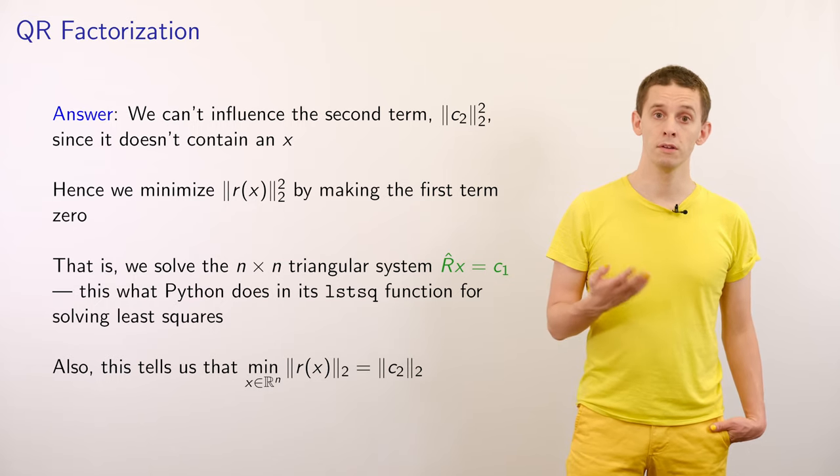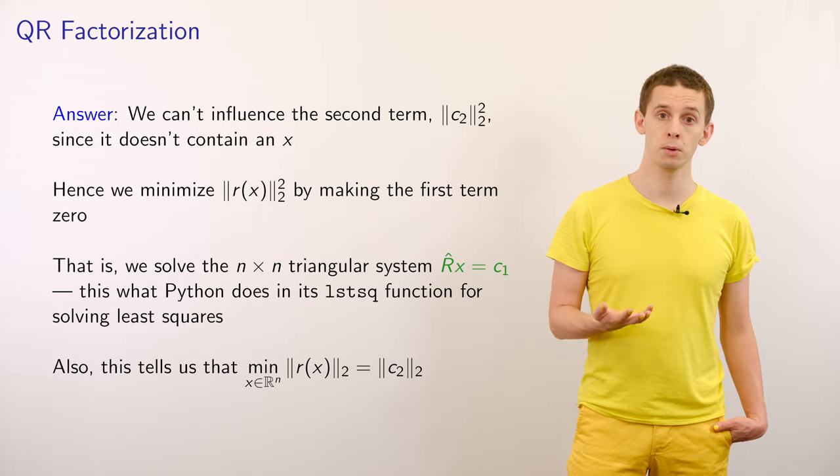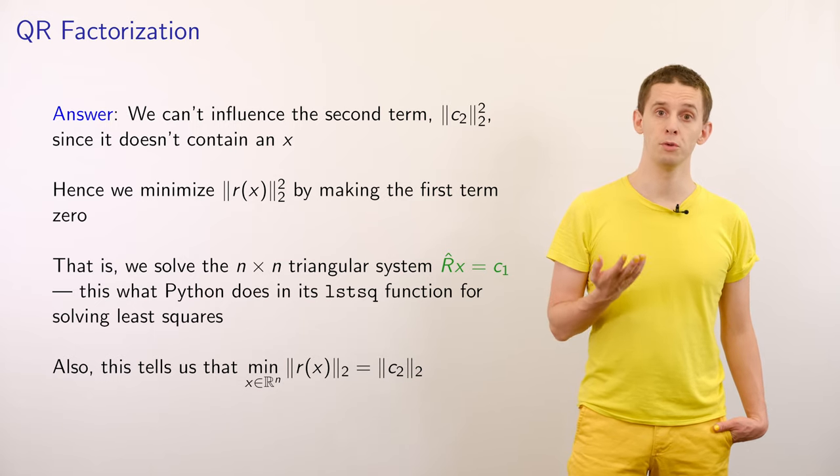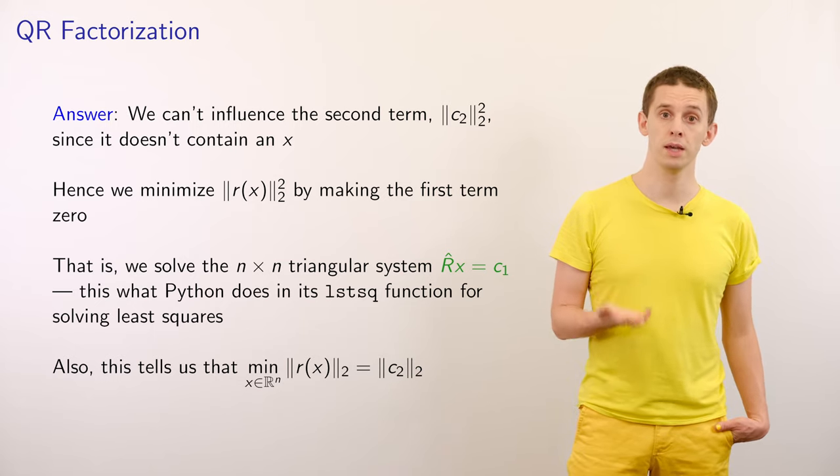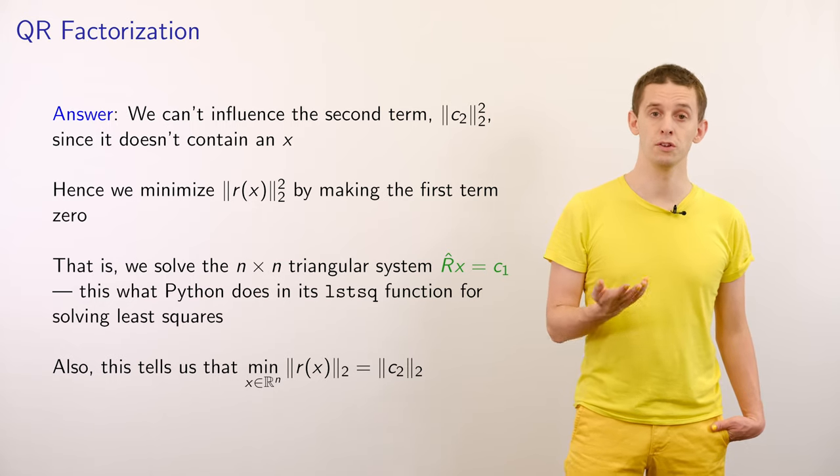In addition, another nice feature we get from this derivation is we see that the minimum Euclidean norm of the residual will actually be equal to the Euclidean norm of this vector C2.